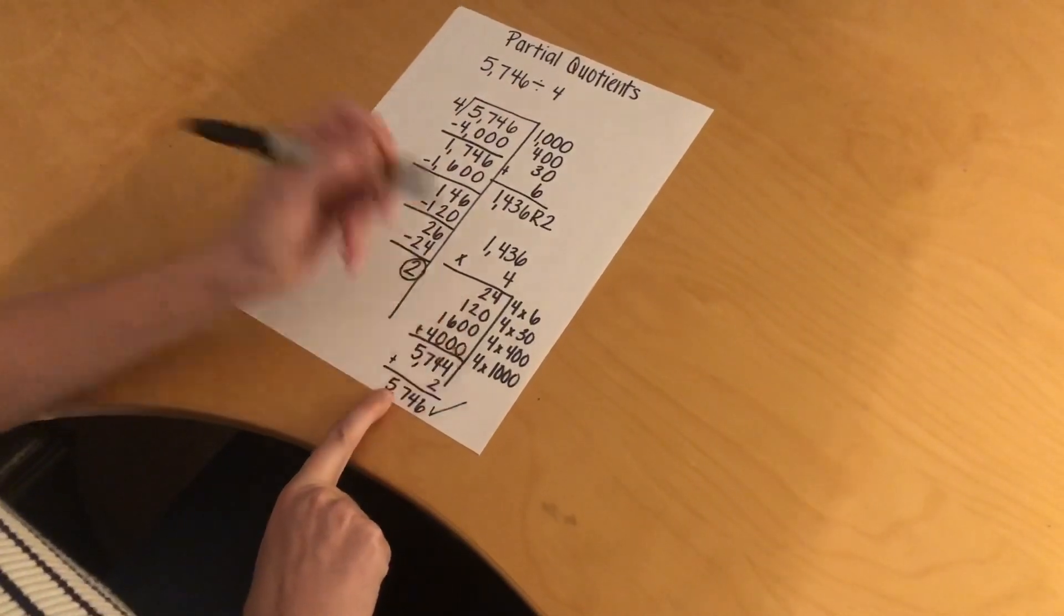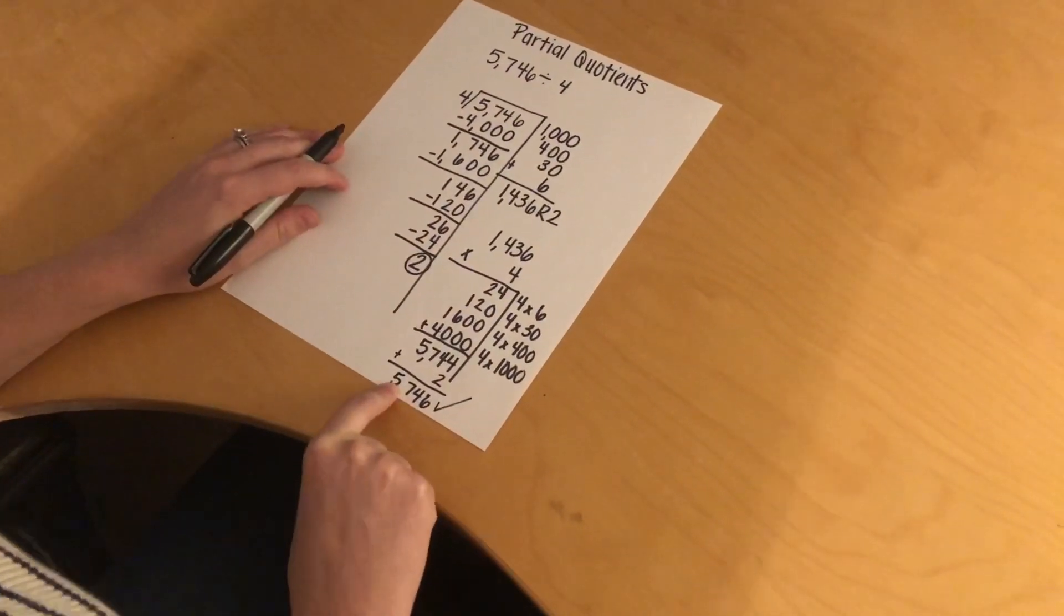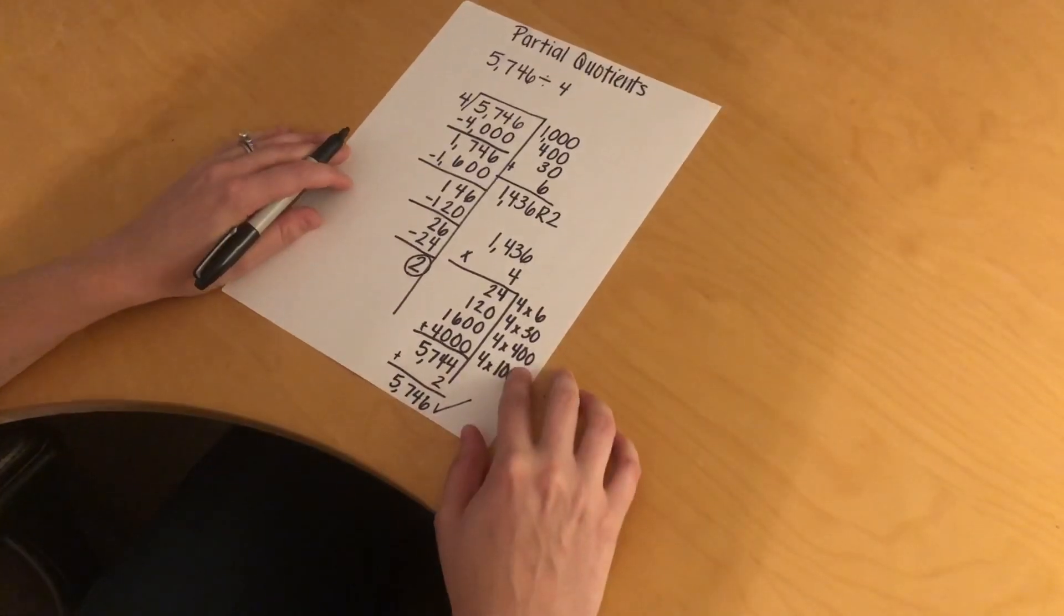So that means it checks out. And that's how you do partial quotients. If you have any questions, feel free to comment. Thanks so much.